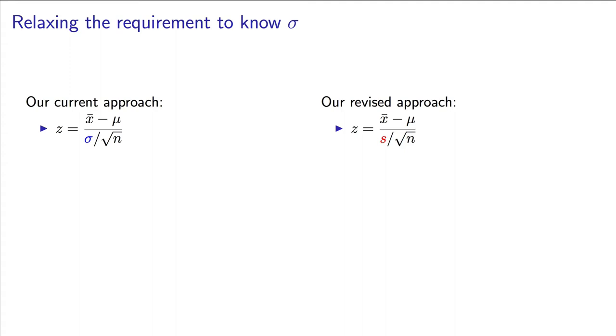So what we do is to use an estimate of the standard deviation, which we now call s. We replace sigma with this s here in the denominator. The z-value for x-bar, however, is modified. It is no longer normally distributed. Rather, it is now t-distributed. Compare these two equations to see the change.